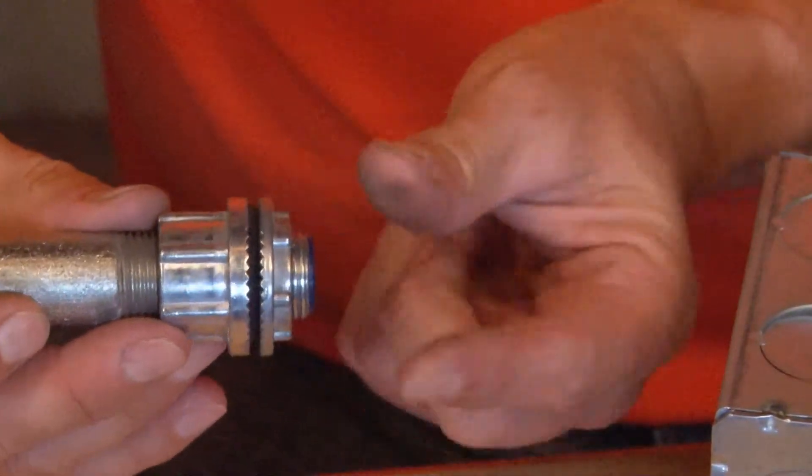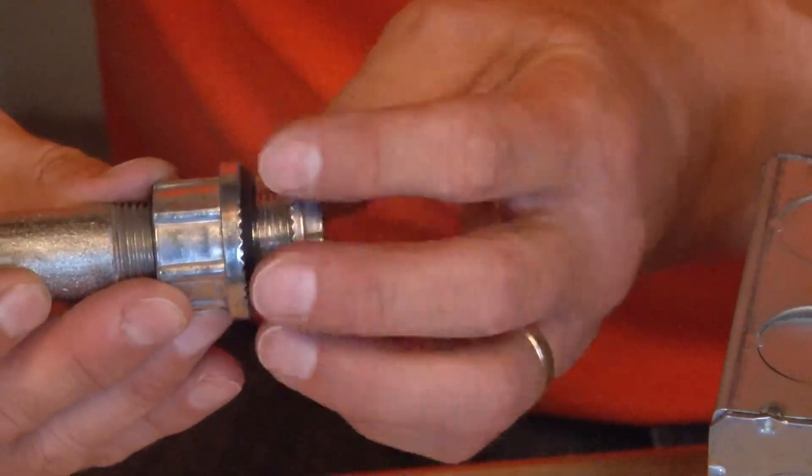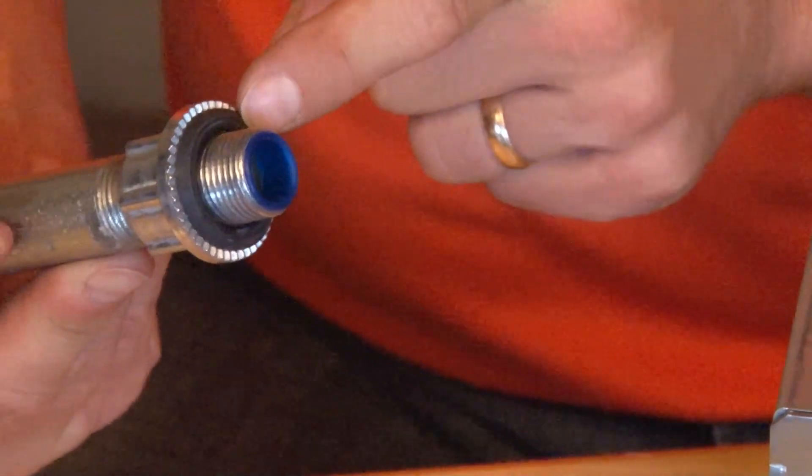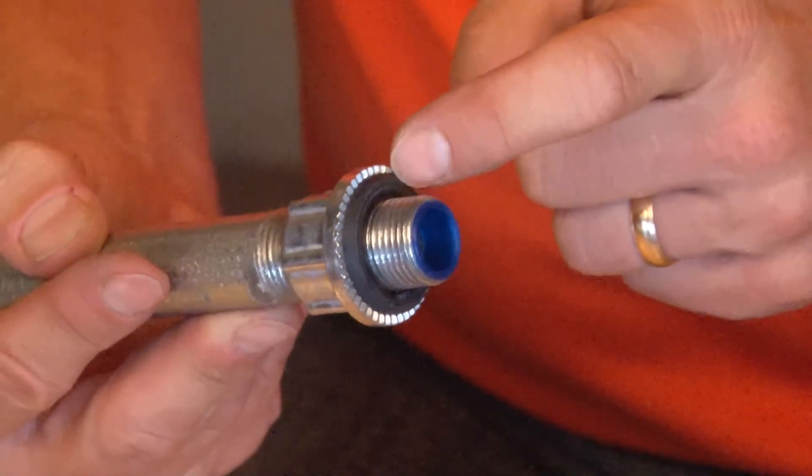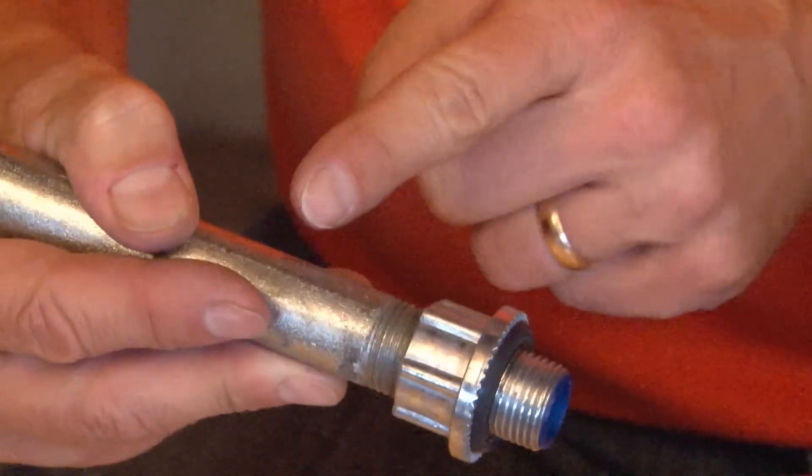Once that's in place, simply remove the die cast oversized lock nut, but be sure that the rubber O-ring that creates the watertight seal remains on the body of the fitting that is attached to the pipe.